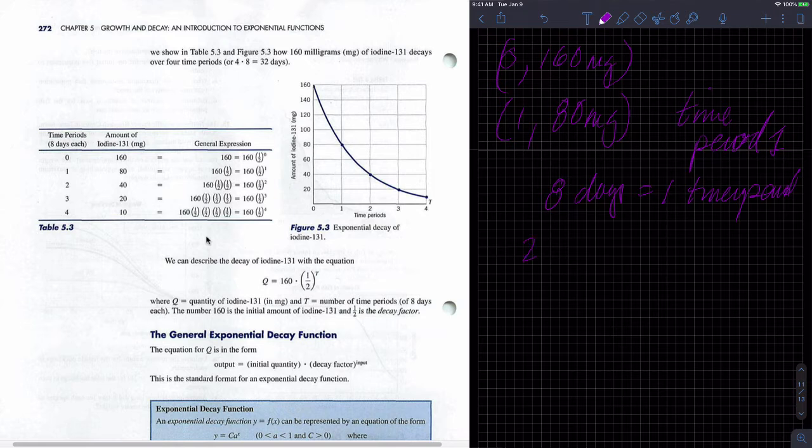So when they say 0.2, two time periods, two Ts, I have 40 milligrams left. They're talking about 16 days after I started, eight days after one, but 16 days after zero. Three would be another eight, so that's 24 days, and I have 20 milligrams after three days. I'm sorry, three time periods, or 24 days.